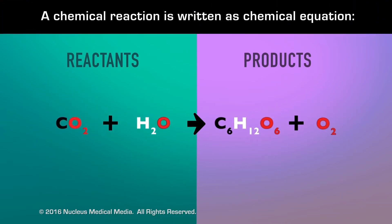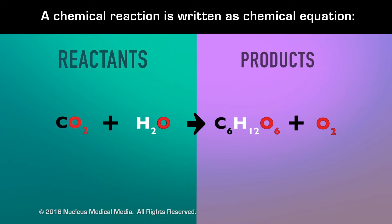Scientists write a chemical reaction in the form of a chemical equation. A chemical equation includes the reactants' chemical formulas on the left and the products' chemical formulas on the right.